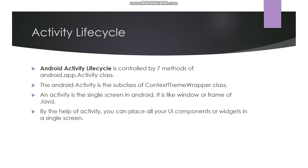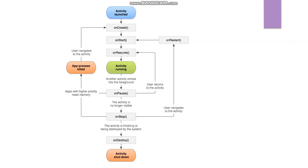Now let's look at how the activity is started, created, and when it is called, and when it is destroyed. We will see all of this in the activity lifecycle. Keep in mind that the Android activity lifecycle is controlled by seven methods. The android.app.Activity class has seven methods that describe the activity lifecycle.